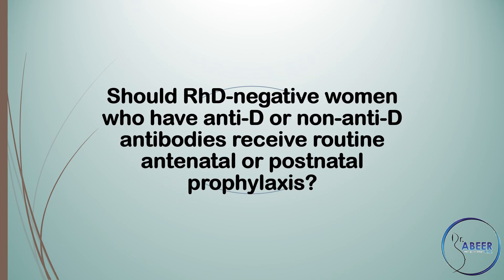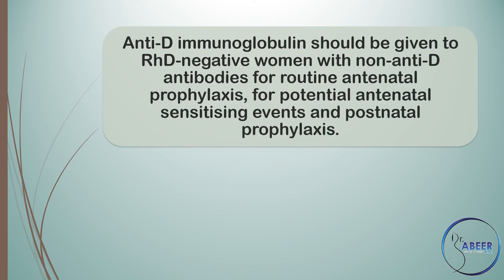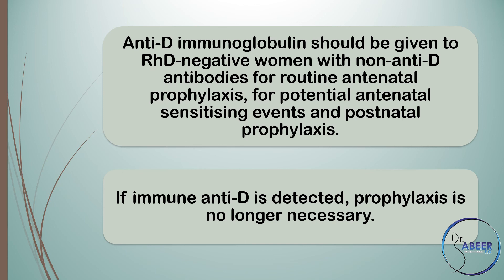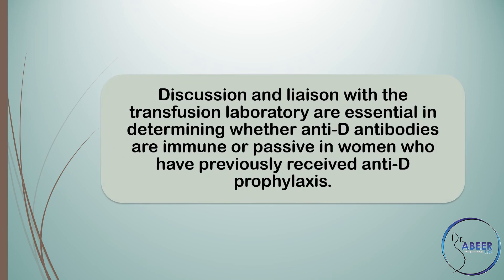Should RhD-negative women who have anti-D or non-anti-D antibodies receive routine antenatal or postnatal prophylaxis? Anti-D immunoglobulin should be given to RhD-negative women with non-anti-D antibodies for routine antenatal prophylaxis, for potential antenatal sensitizing events, and for postnatal prophylaxis. If immune anti-D is detected, prophylaxis is no longer necessary. Discussion and liaison with the transfusion laboratory are essential in determining whether anti-D antibodies are immune or passive in women who have previously received anti-D prophylaxis.